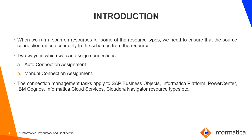Whenever we run a resource of certain resource types, we need to ensure that schemas from the resources were accurately mapped with the source connections. Enterprise Data Catalog can automatically detect how the database schemas were assigned to the resources whenever we run the resource. We can also assign or unassign the schemas from the resource to the connections based on our requirements. There are two ways in which we can do this: auto connection assignment and manual connection assignment.